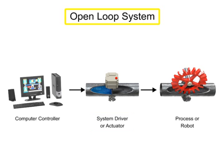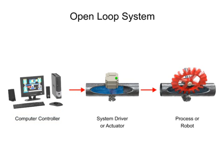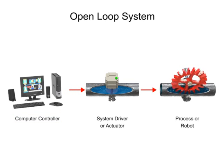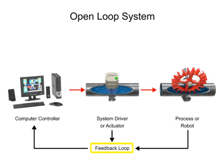In open-loop systems, the program length of time the signal is applied, as well as the integrity of the signal, are critical for ensuring that the new operation is completed. This is because there is no feedback to the computer from the system driver or the robot, and thus no updates to the signal outputs can be made.